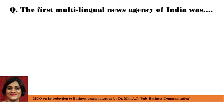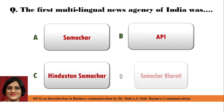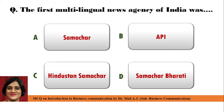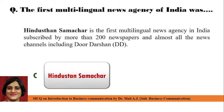Next question: The first multilingual newspaper news agency of India was — Point A: Samachar, Point B: APR, Point C: Hindustan Samachar, and Point D: Samachar Bharati. Correct answer is Point C: Hindustan Samachar. The first multilingual news agency of India was Hindustan Samachar. Hindustan Samachar is the first multilingual news agency in India, subscribed by more than 200 newspapers and almost all the news channels including Doordarshan, that is DD Channel.